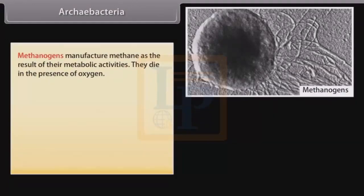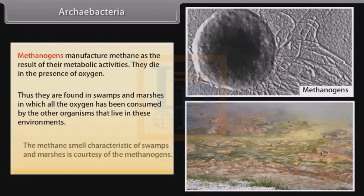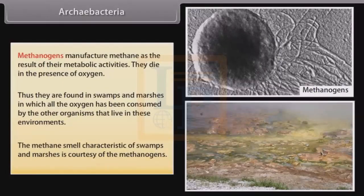Methanogens manufacture methane as the result of their metabolic activities. They die in the presence of oxygen and are therefore found in swamps and marshes where all the oxygen has been consumed by other organisms. The methane smell characteristic of swamps and marshes is courtesy of the methanogens.